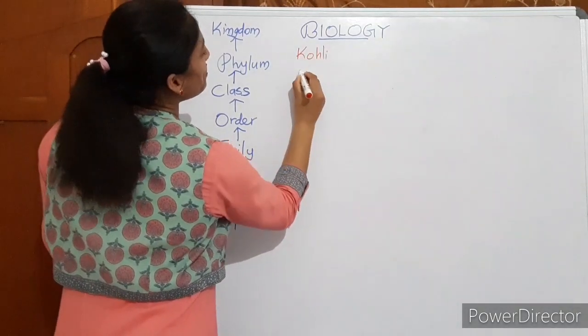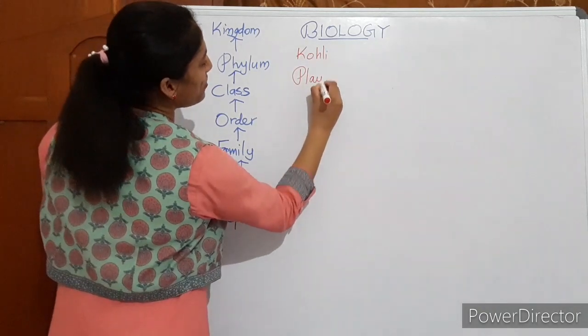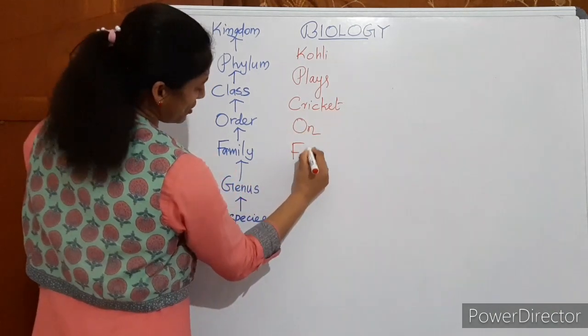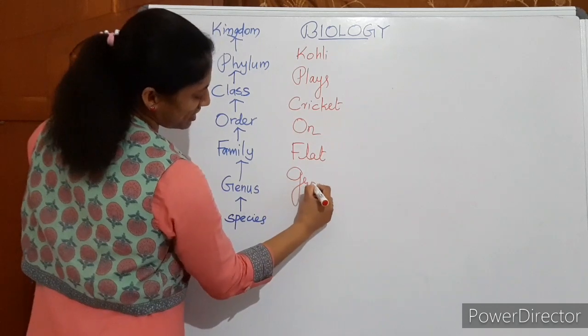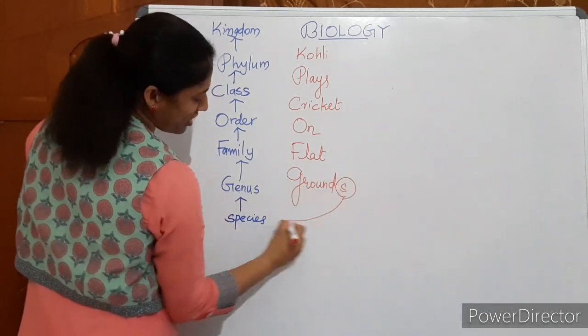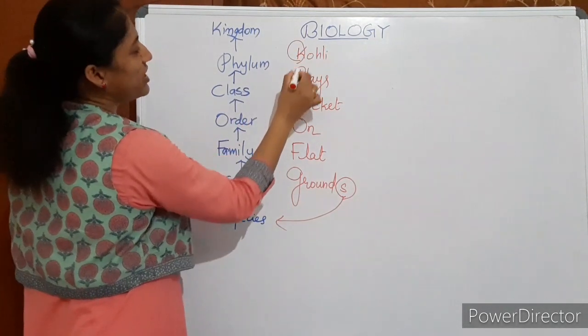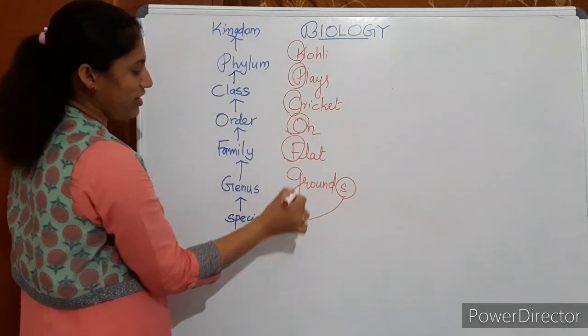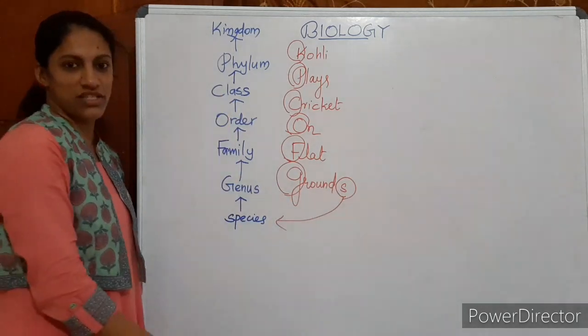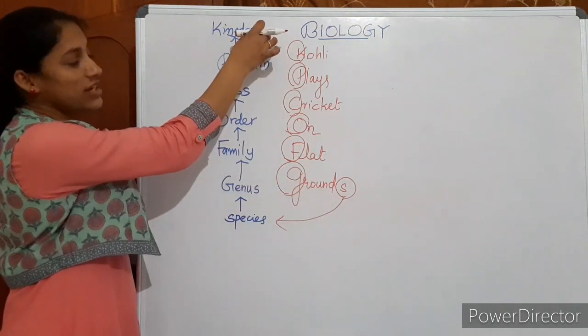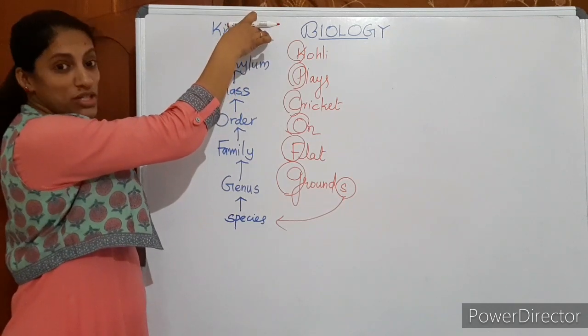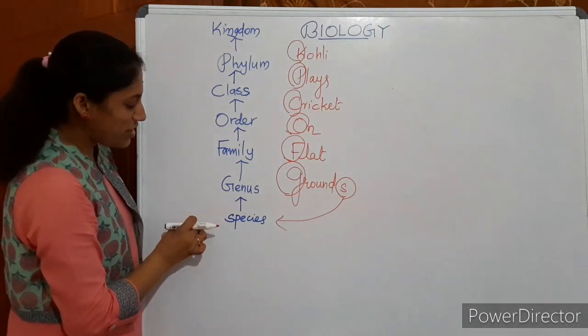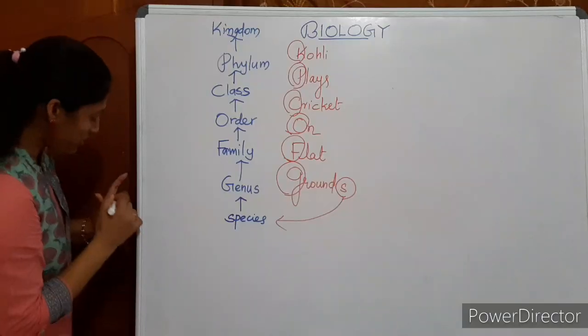Calling. Place. From this order to downward the first chord. Place. See. Cricket. On. Flat. Grounds. S is for species. Calling. K for kingdom. P for phylum. C for class. O for order. F for family. G for ground, genus. And S for species. This is a simple chord to study the hierarchy, taxonomic hierarchy from top to bottom. Similarly, you can develop a chord to study from base to top. Usually we write from here to there. With this chord.